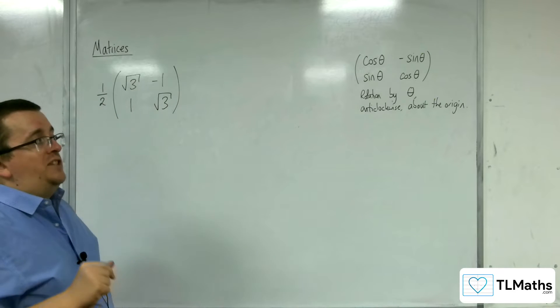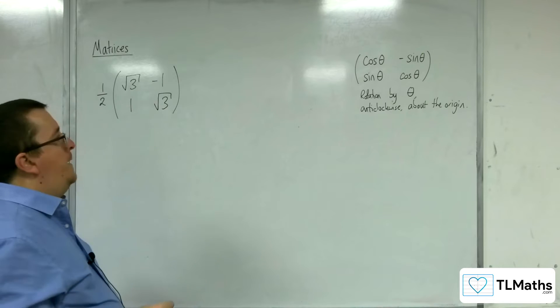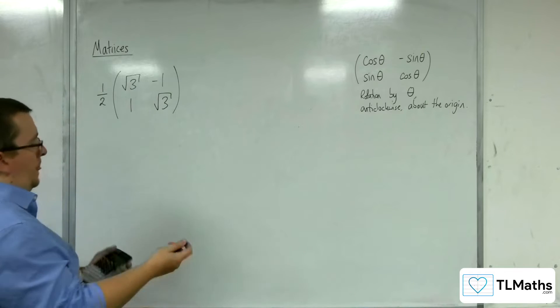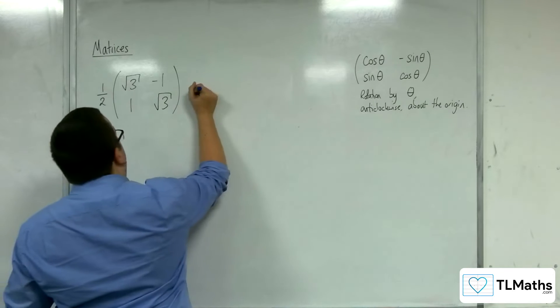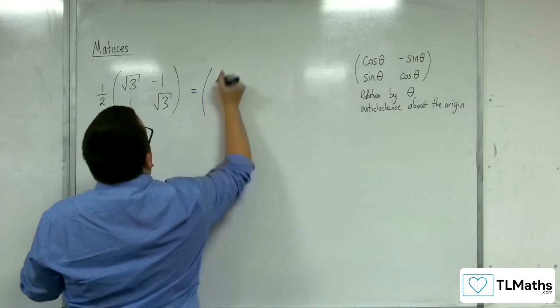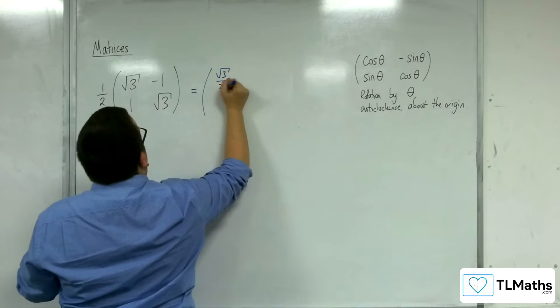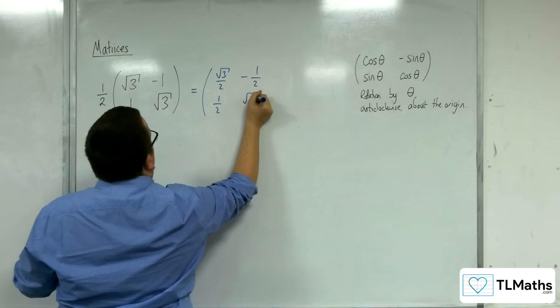Now, let's say we just needed to work out what the angle theta was. So what we would need to do is, I would probably bring that half in, it's just a scalar multiplier at the moment. So I would bring it in and write that as root 3 over 2, negative 1 over 2, 1 over 2, and root 3 over 2.